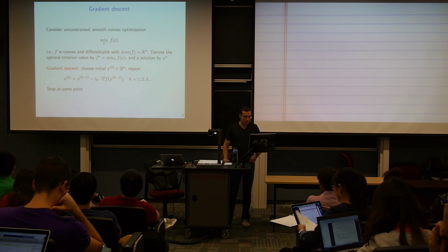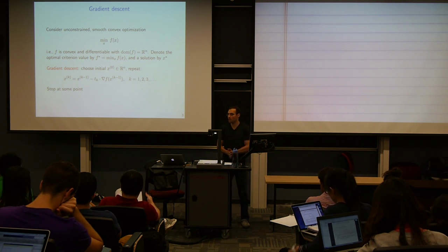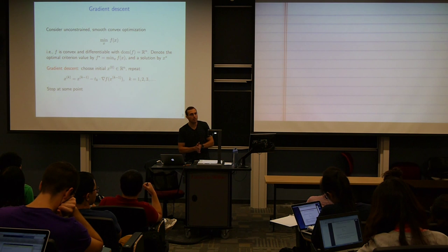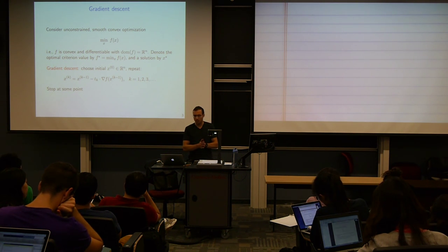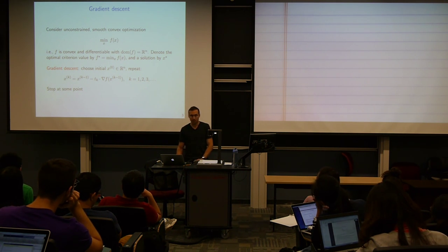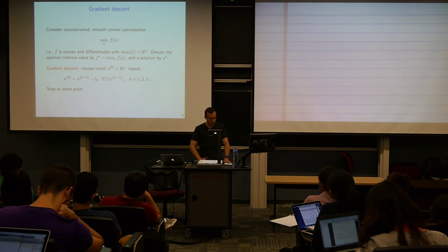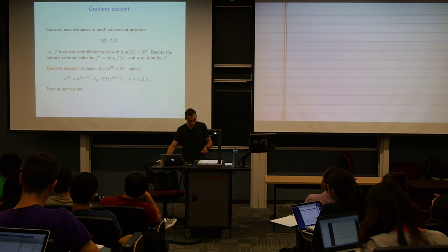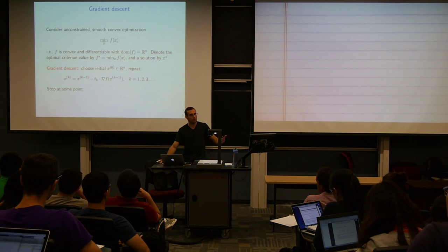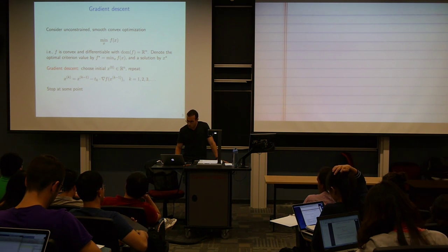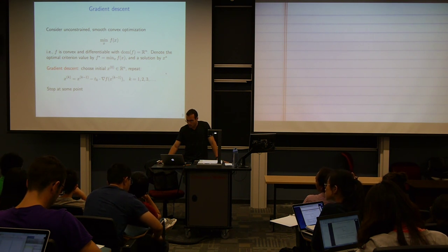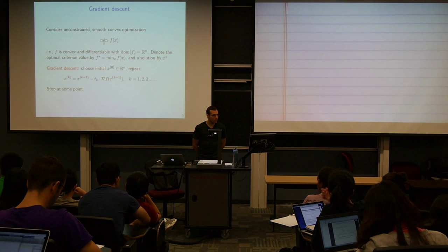We're going to be considering unconstrained smooth convex optimization. We have some function f — it's smooth and convex. By smooth, I mean it's differentiable. Another assumption we'll make is that its domain is all of R^n — the function is well-defined over all of R^n. This is the simplest convex optimization problem we could ask to solve, but what we do here will serve as a building block for much harder problems.